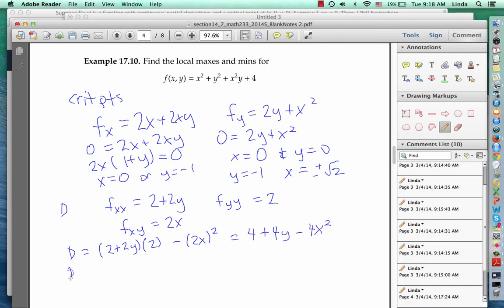If we evaluate the discriminant at 0, 0, we get 4, which is greater than 0. And in addition, f sub xx at 0, 0 is equal to 2, which is greater than 0. So we have a local min.